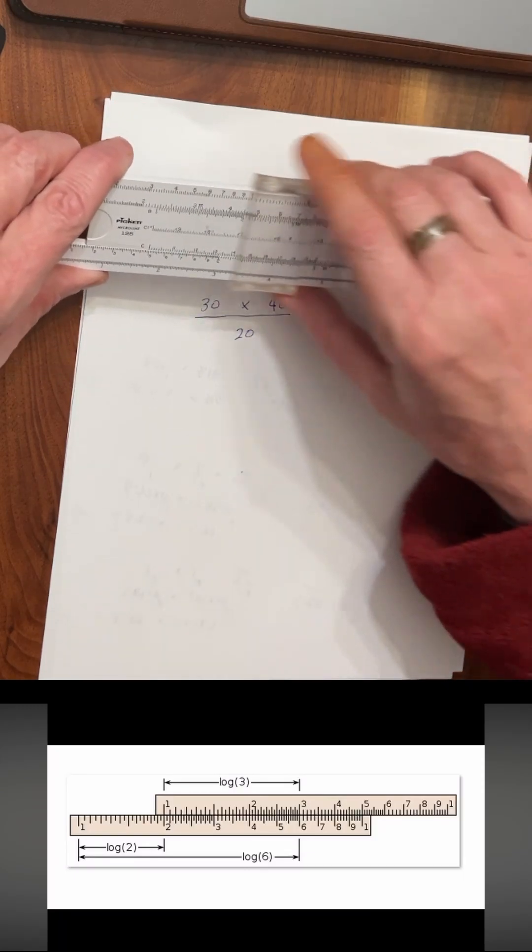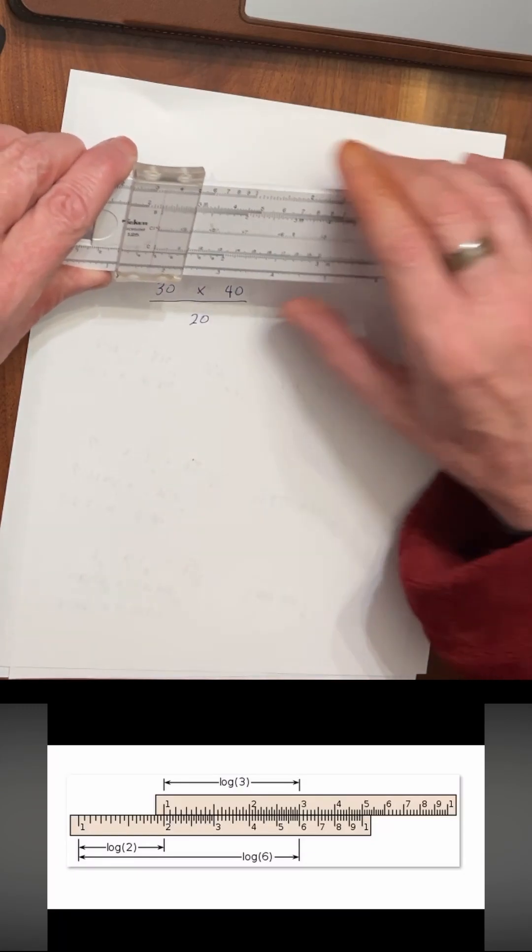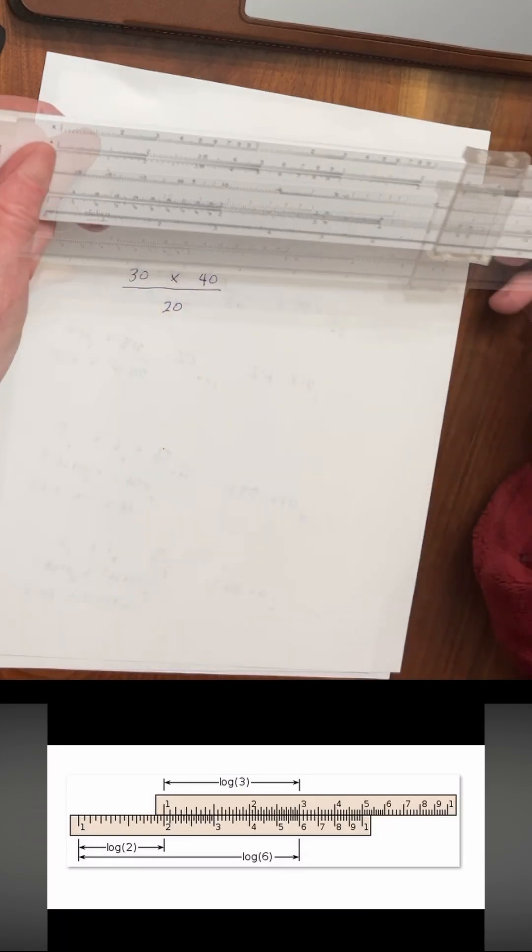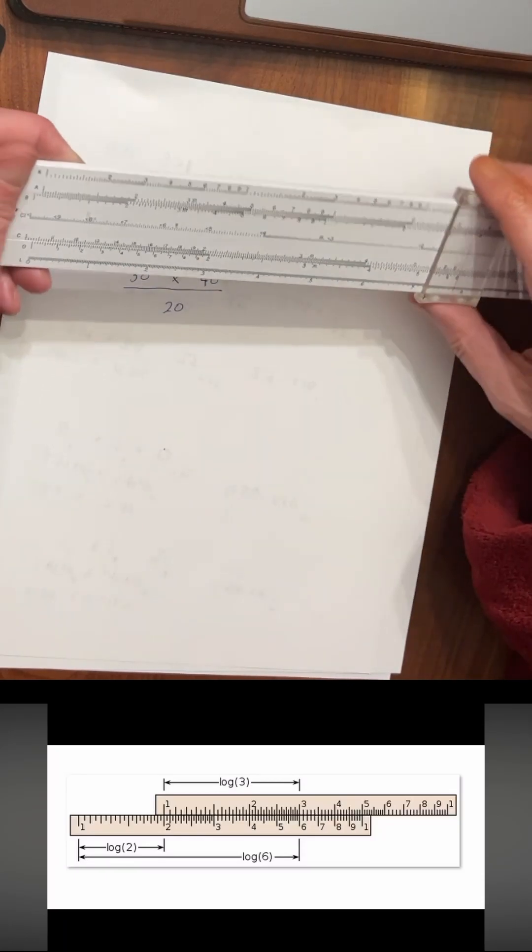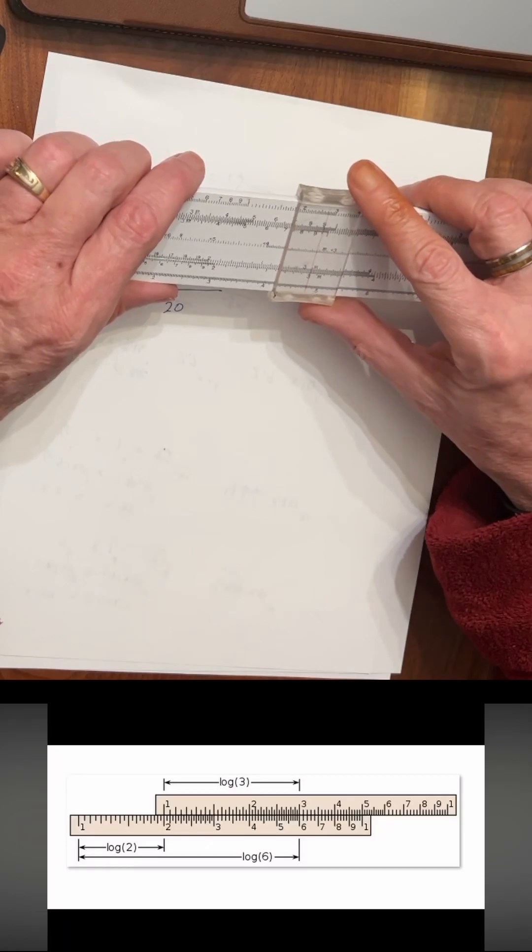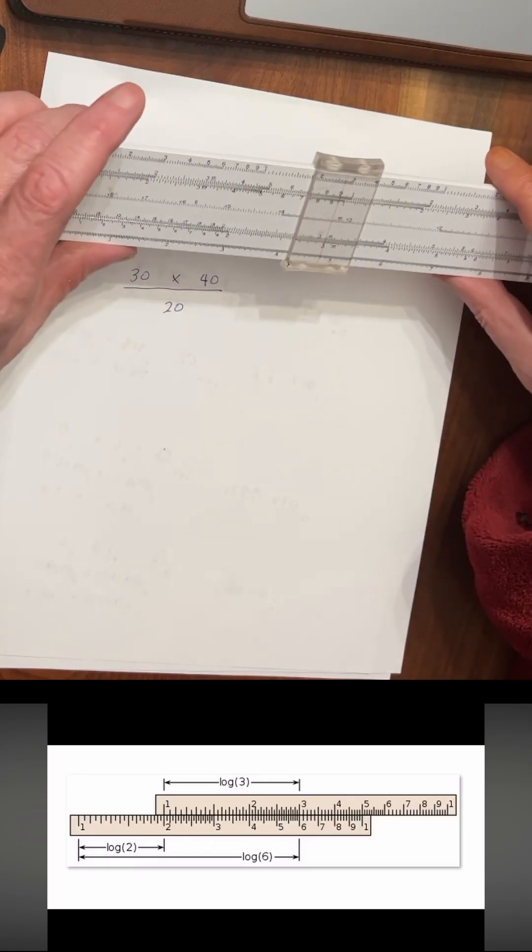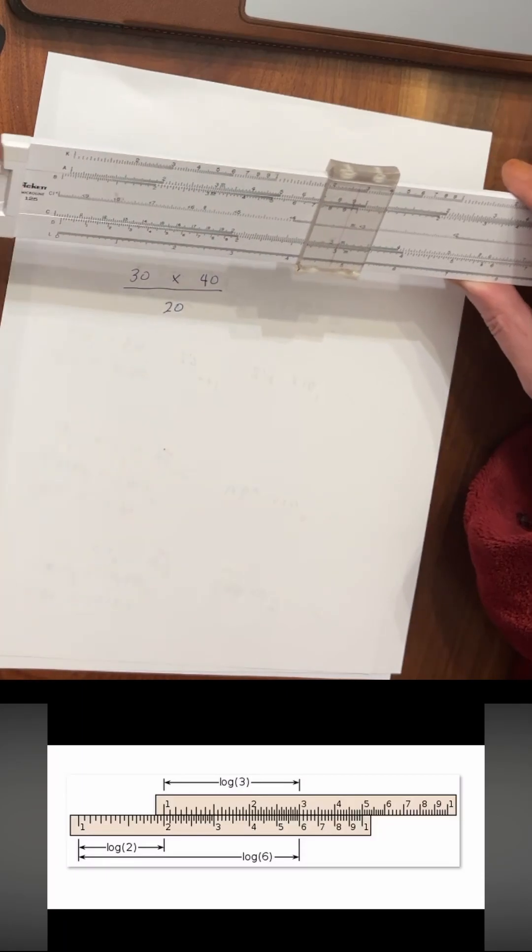Notice that I didn't have to come all the way back here to the index and then go all the way out to 4 again. The way you do complex operations like this with a slide rule is you put your cursor on the first number and then you immediately go to your next operation.